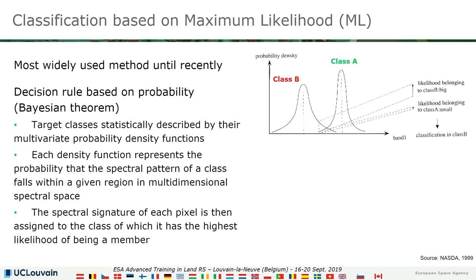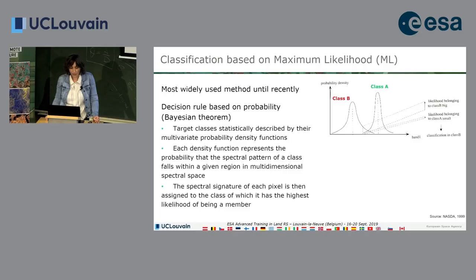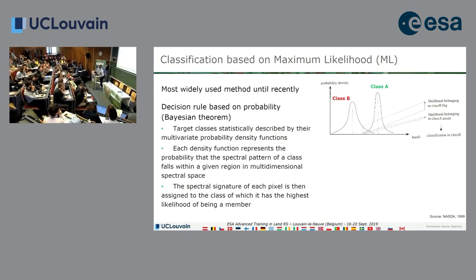There is an assumption that this function follows a Gaussian distribution. Then each pixel will be compared to the different functions. For instance, in this simple example in one dimension, you have this pixel here and you can see that the probability that it belongs to class B is higher than the probability that it belongs to class A, so it would be assigned to class B.